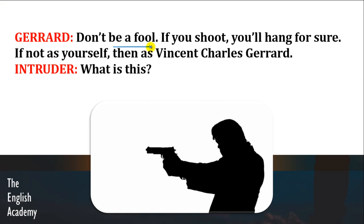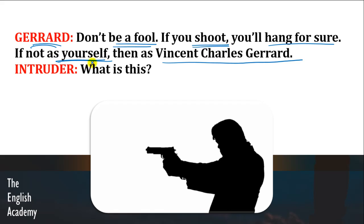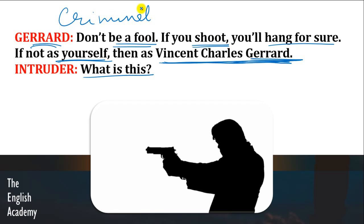Gerard says: 'Don't be a fool. If you shoot, you will hang for sure — if not as yourself, then as Vincent Charles Gerard.' Ab yahaan par Gerard is intruder ko apni baaton mein uljaata raha hai. Woh kehta hai ke bevkoof mat bano — agar tum goli chala bhi doge, toh bhi, agar tum apni identity ki wajah se nahi pakdae jaoge, toh Vincent Charles Gerard ki identity se pakdae jaoge. Intruder kehta hai: 'What is this?' Intruder ko vishwaas nahi ho raha.